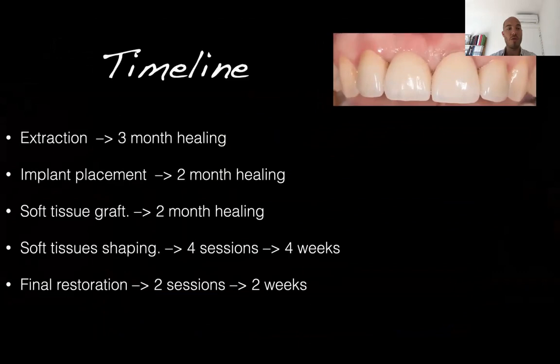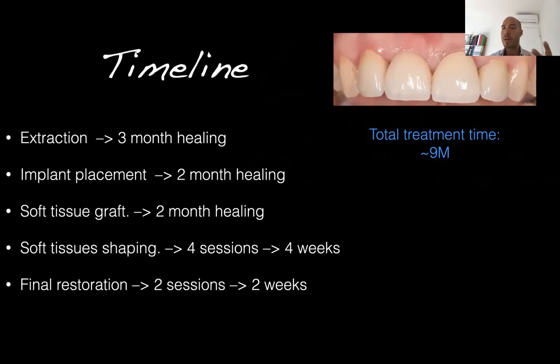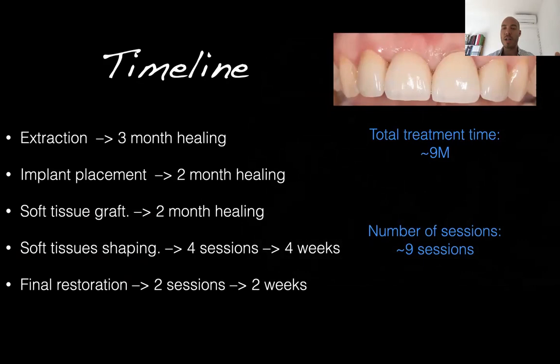Looking at the timeline: extraction, wait three months, place the implant. With sufficient bone, two months of healing is enough. Then the soft tissue graft, ideally in the aesthetic zone, another two months of healing, soft tissue shaping over a couple of sessions, and final restoration in a week or two. Roughly, total treatment time is about nine months, requiring approximately nine sessions — an acceptable outcome, but a considerably long timeline.